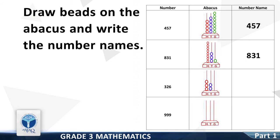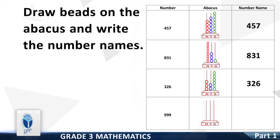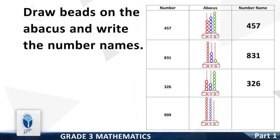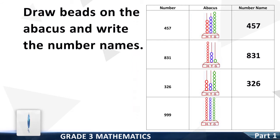999. Draw beads on the hundreds column — it is 9. Now draw beads on the tens column — it is 9. Now draw beads on the ones column — it is 9. Now write the number name: 999.